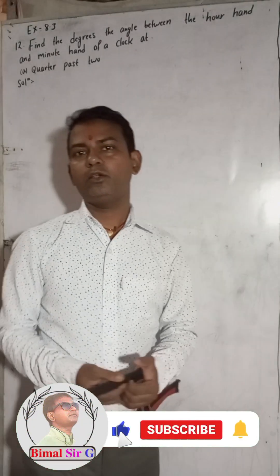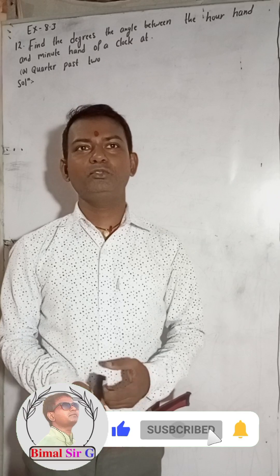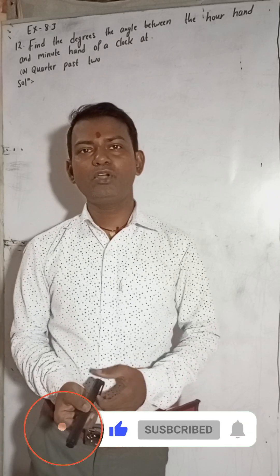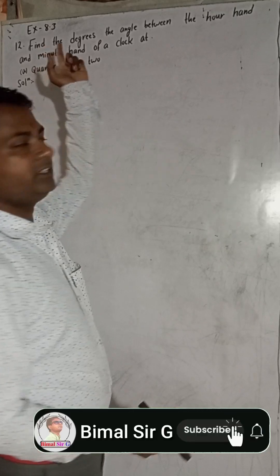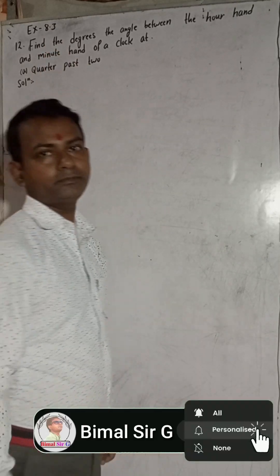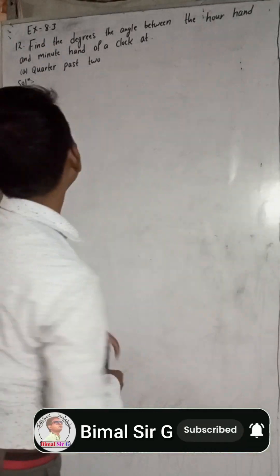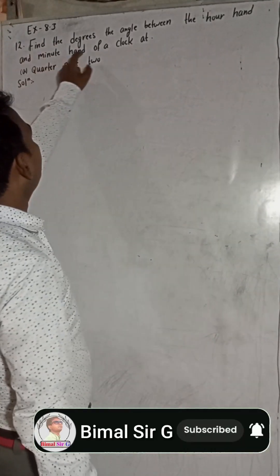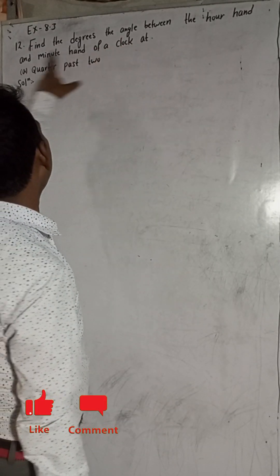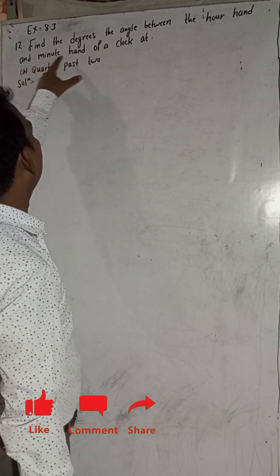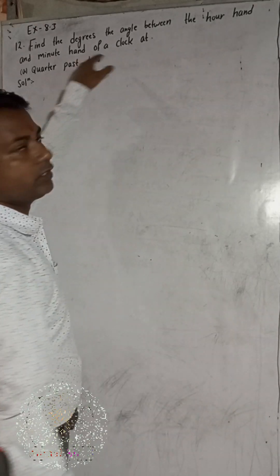Hi everybody. Welcome back to Human Self YouTube channel. Now I am going to solve OPT Math exercise 8.3, question number 12: Find the degrees, the angle between the hour and the minute hand of the clock at quarter past 2.